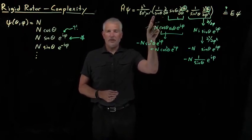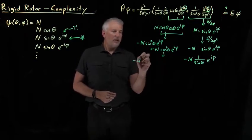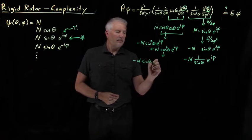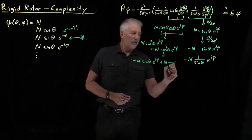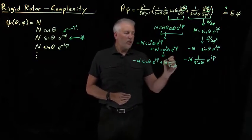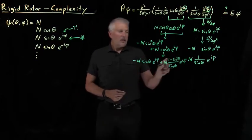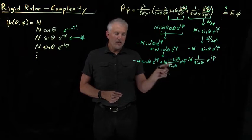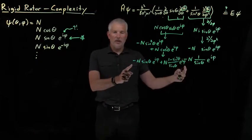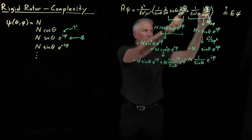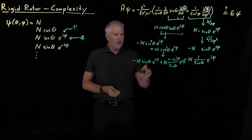The last step inside the parentheses is to divide by sine theta. Dividing gives negative n sine squared over sine, which is negative n sine theta, plus n cosine squared over sine theta. Recognizing that cosine squared equals 1 minus sine squared, we get n times (1 minus sine squared) divided by sine theta times e to the i phi. This gives a term involving 1 over sine theta that won't cancel immediately, plus terms from the sine squared.